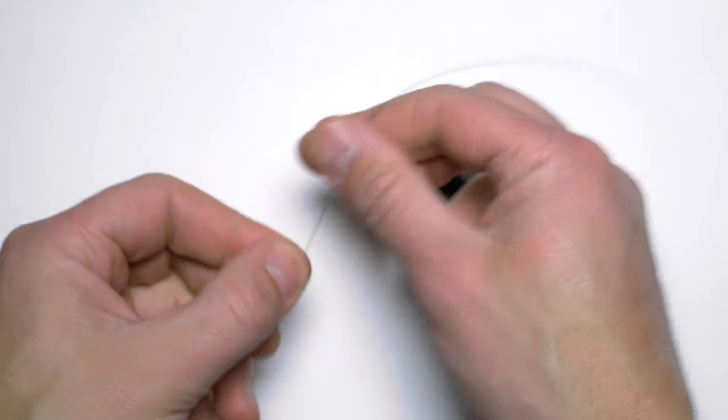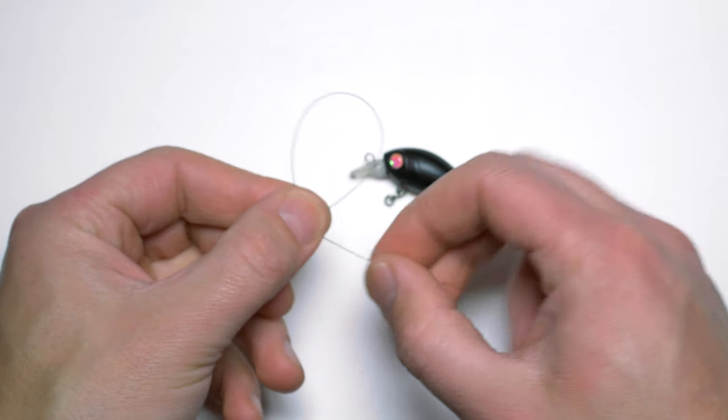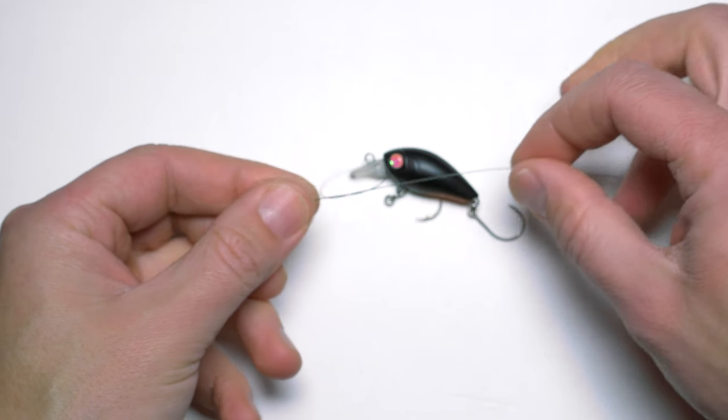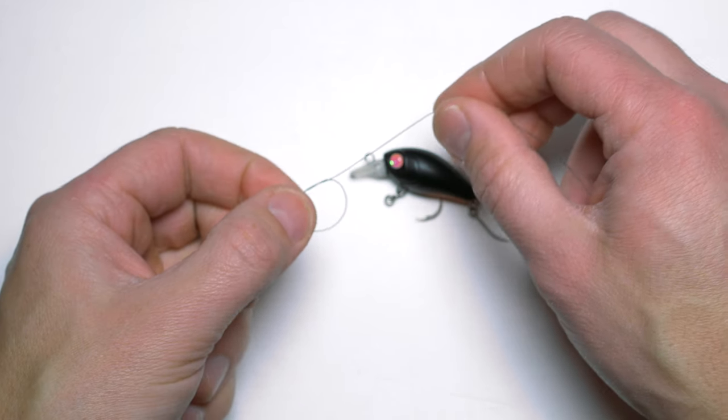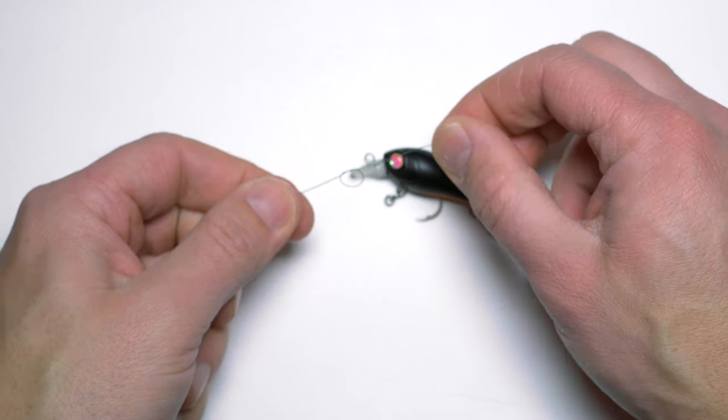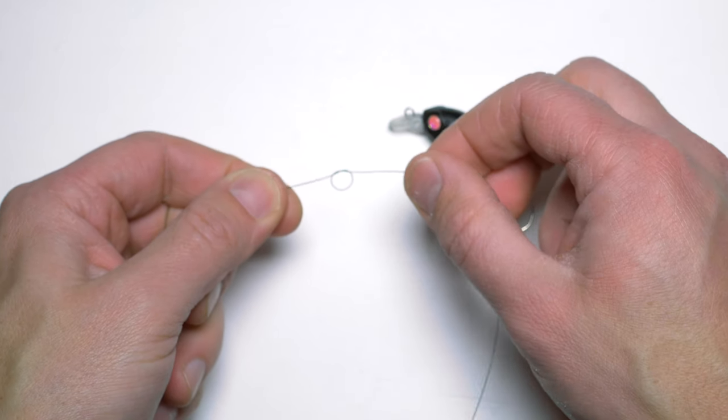Then I will grab about 15 cm of my line and then will tie a simple sergeant knot on it. At this point, I don't want to pull it tight as yet.